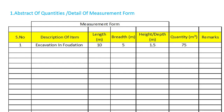In this form, the first column is serial number, then the next one is description of item. Then we need to put the dimensions — length, breadth, and depth. Then we need to find out the total quantity. If we have any remarks, we can add them here.